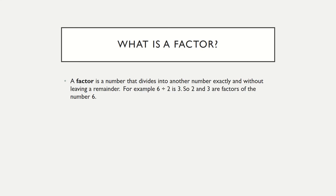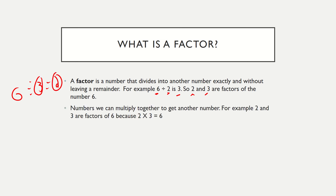What is a factor? A factor is a number that divides into another number exactly and without leaving a remainder. For example, six divided by two is three, so two and three are factors of the number six. We could also go six divided by three is two. You can also look at that another way, which is multiplying. What numbers can we multiply together to get another number? Two and three are factors of six — two times three is six. Another factor of six could be one times six. One times anything is going to give one of the factors.